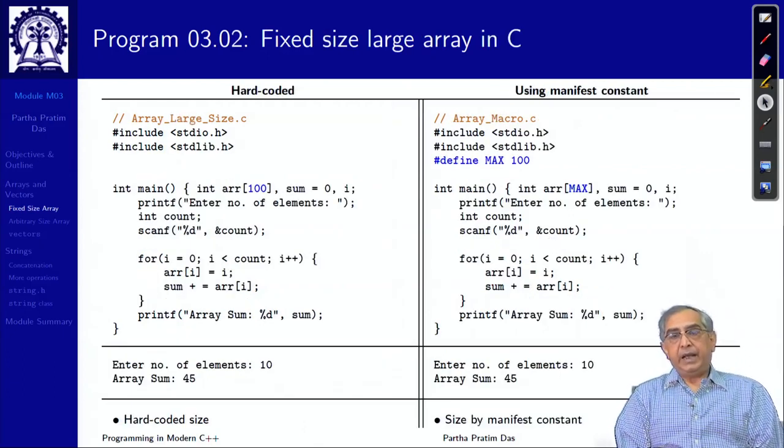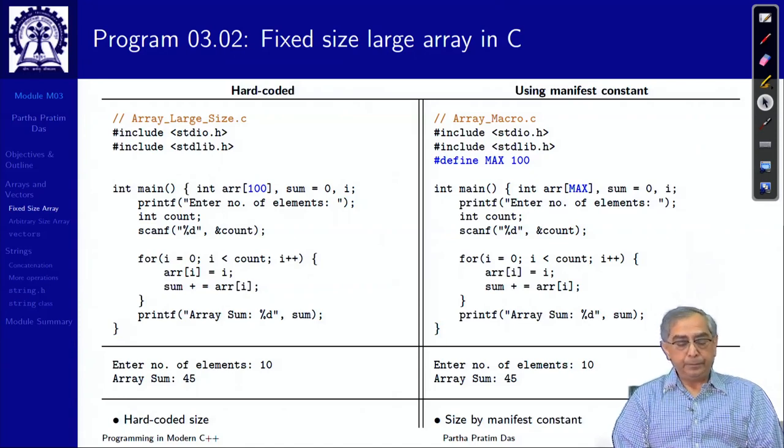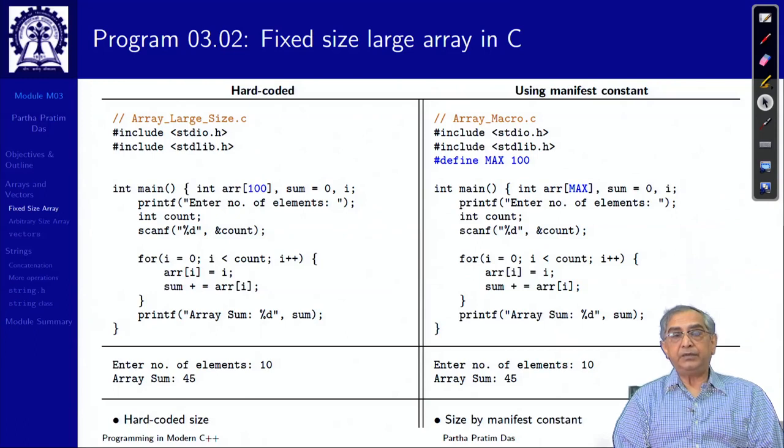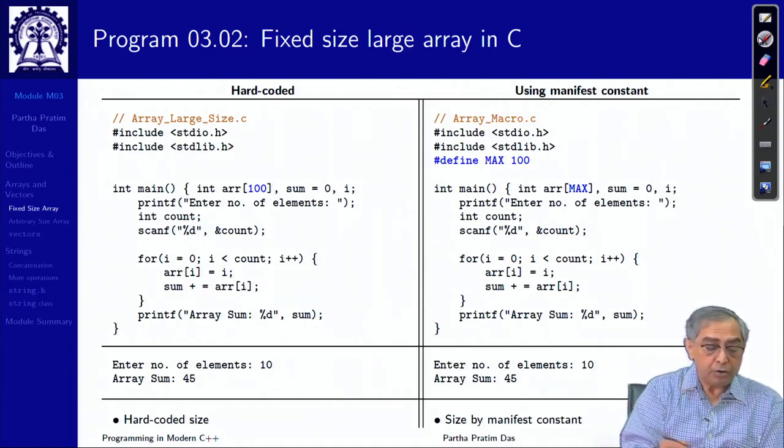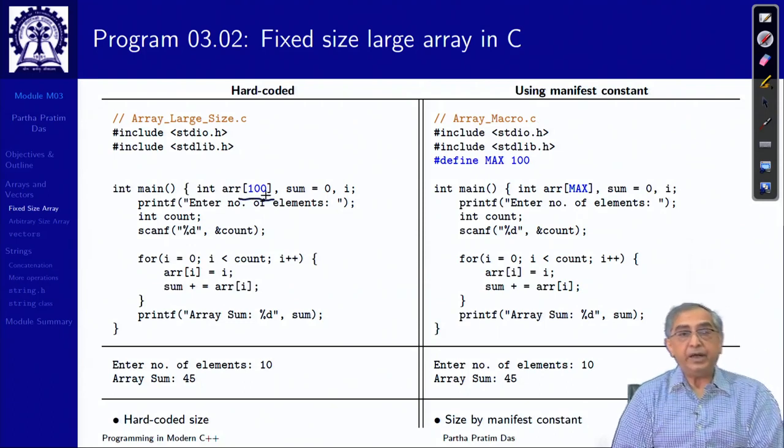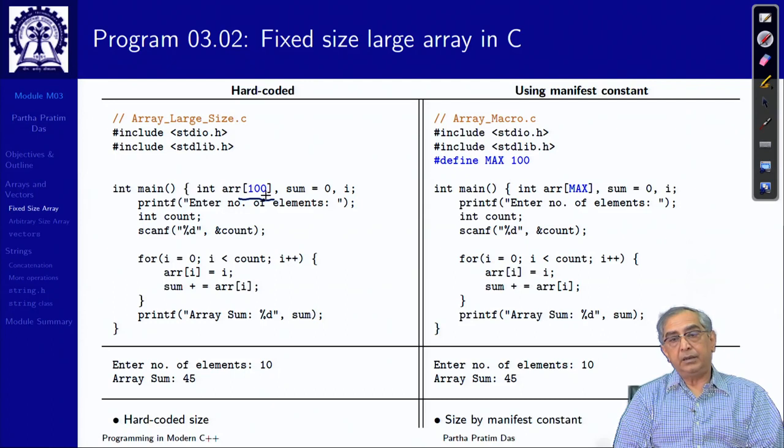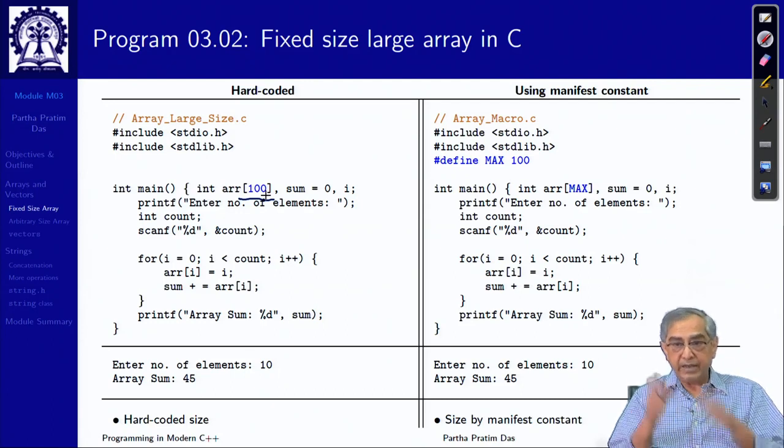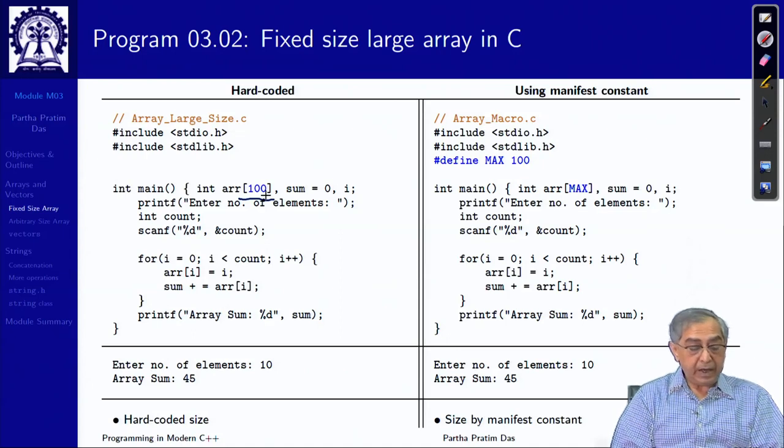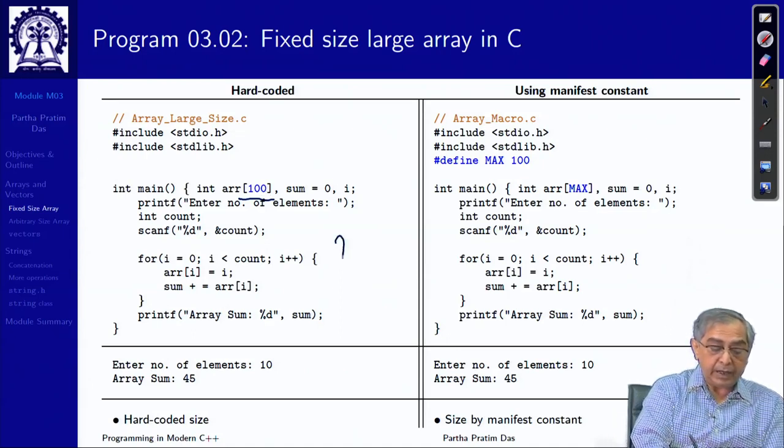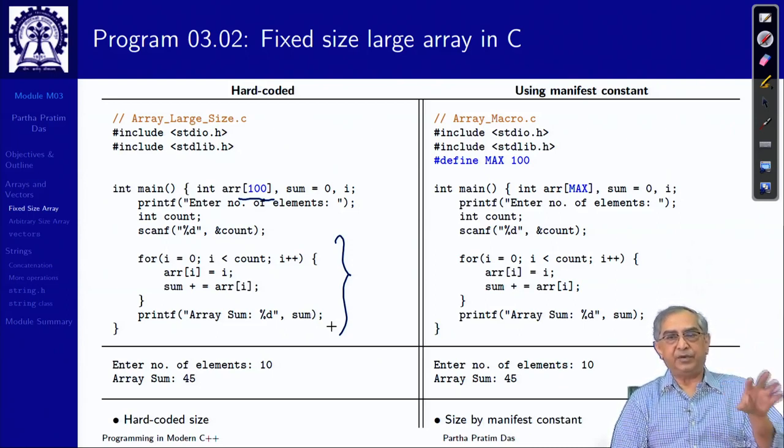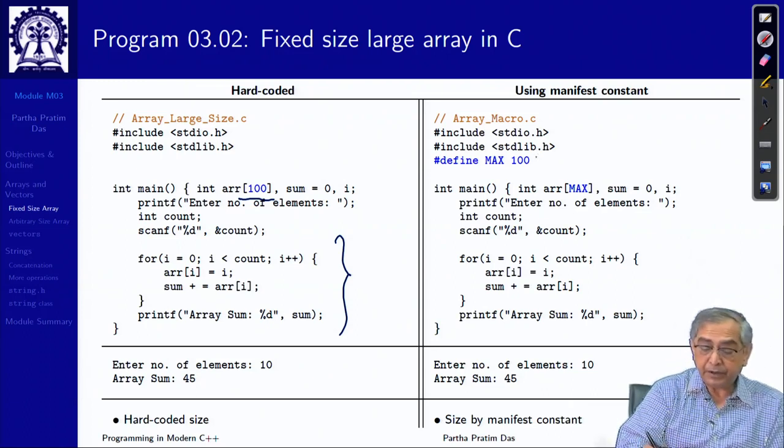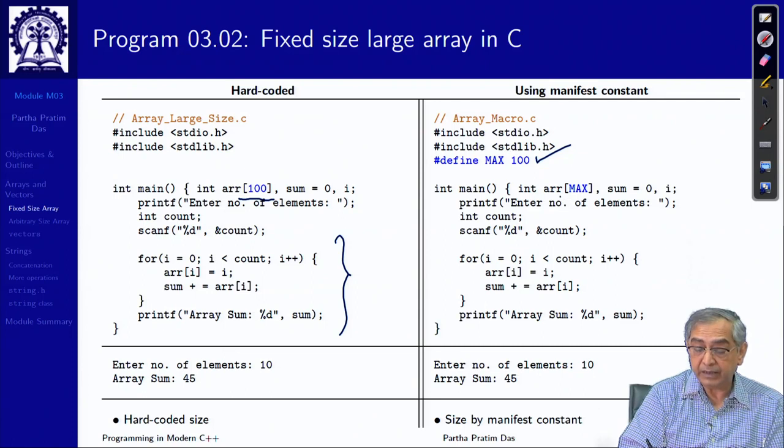Now, let us say this fixed size array could be a large one. It is possible that it is fixed size because we do not know what the maximum size should be, so we just make it large. Here is one way of writing it, where we use the constant size of the array right into the code.